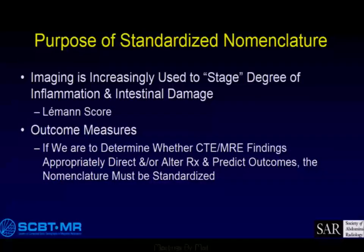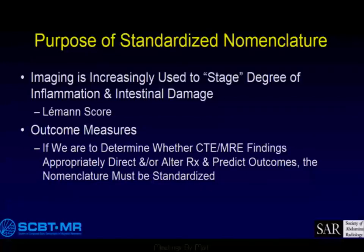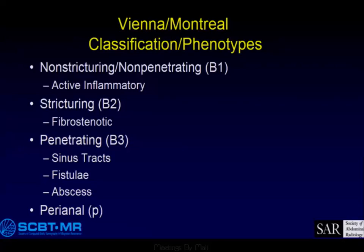Imaging is increasingly used to stage the degree of inflammation and intestinal damage. Outcomes measures are only going to be able to be processed and done if we use common terms. If we don't use common terms, then we don't know what we're measuring. This is the phenotype classification that gastroenterologists use based on Vienna and Montreal.